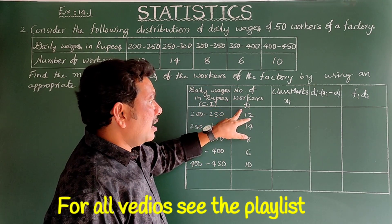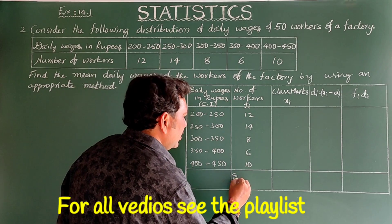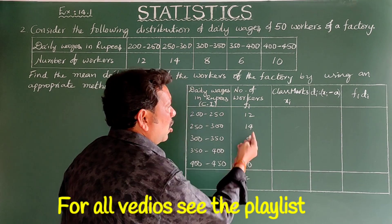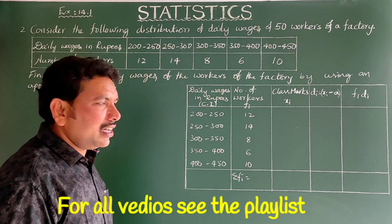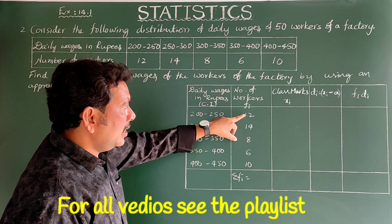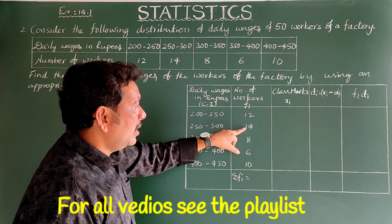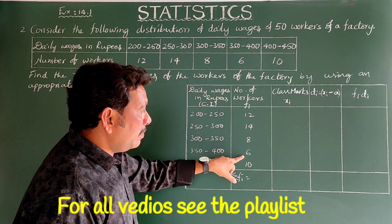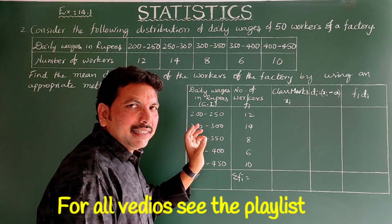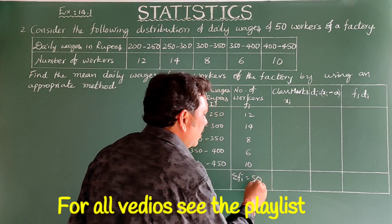The number of workers (fi) for each class interval is given. Sigma fi is already given as 50 workers. Checking: 12+8 = 20, 14+6 = 20, 20+20 = 40, 40+10 = 50. Confirmed, sigma fi = 50.